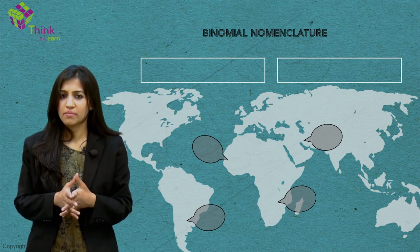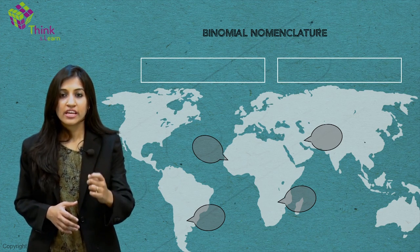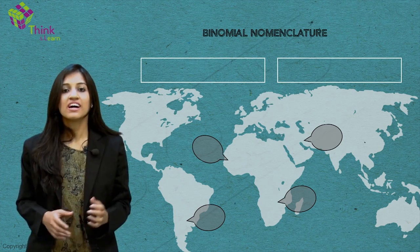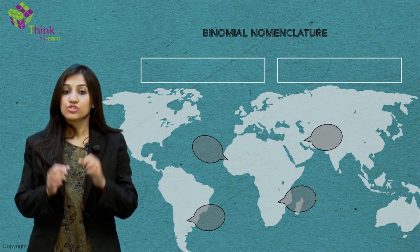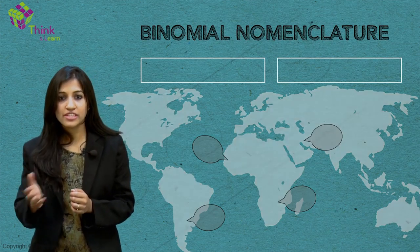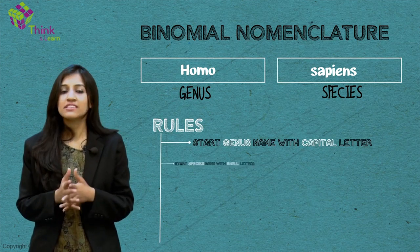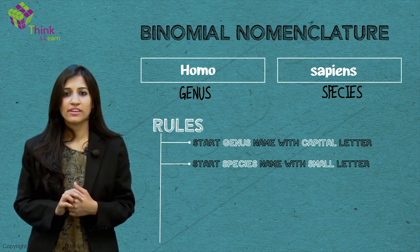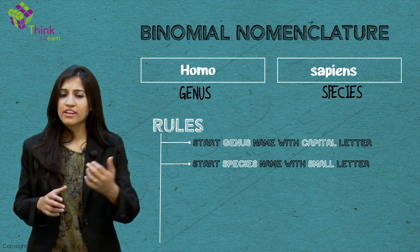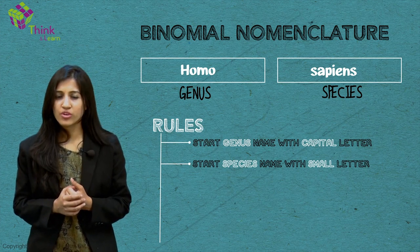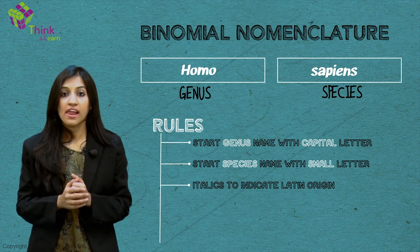Although this does sometimes happen, the rules are simple. Every recognized species on earth, at least in theory, is given a two-part scientific name. This system is called binomial nomenclature. Start the genus name with a capital letter and the species name with a small letter, and you have a good start. Make it a little bit more fancy by underlining it if you write it out, or type it out in italics to indicate a Latin origin.